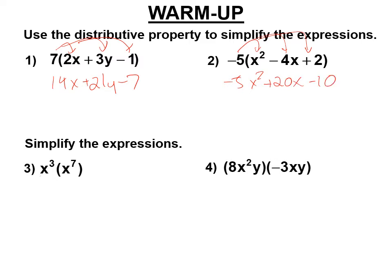When you multiply things with the same base, you add the exponents — x to the 10th. So when we multiply these, we multiply the coefficients: 8 and negative 3 are coefficients, giving negative 24. For the powers, we add the exponents: x squared times x is x cubed, and y times y is y squared. Remember, when you don't see an operation, it always means multiply. So we have negative 24x cubed y squared.